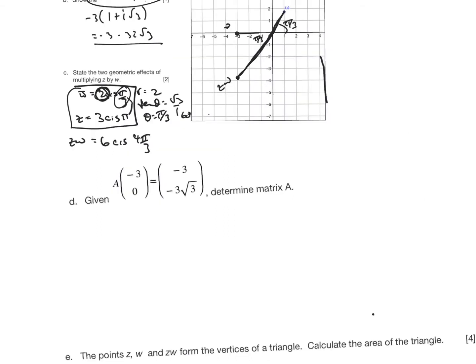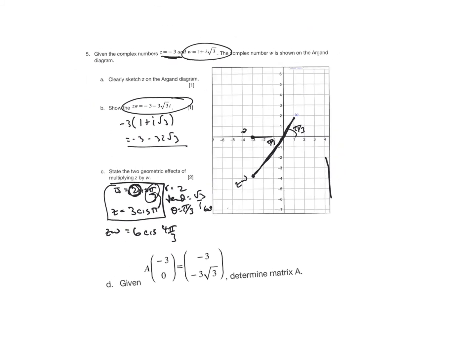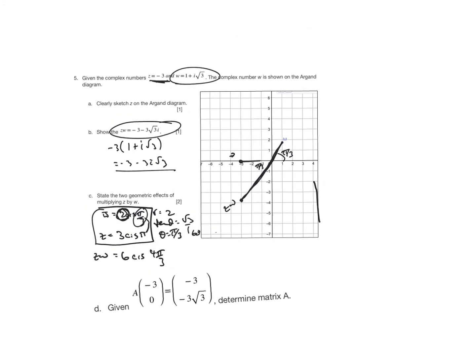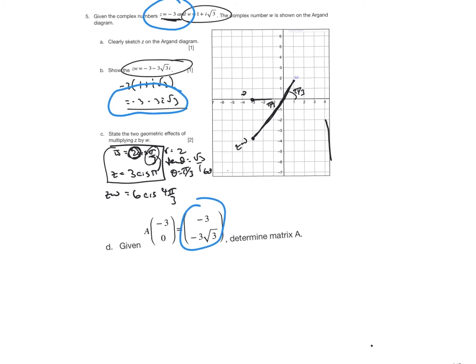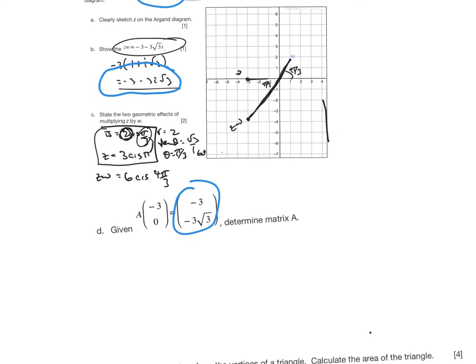Jumping here to part D. Now, I want to find matrix A, and I have to recognize that negative 3, 0 is the same as the point z, and this point here is the same as zw. And so A is just going to be the transformation matrix that multiplies. So A is going to be the scale enlargement by 2 times the rotation.